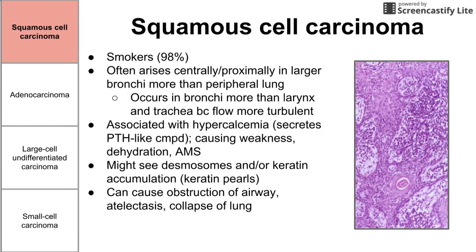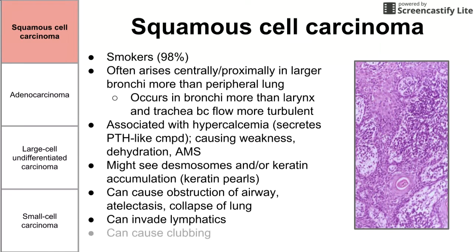Squamous cell can obstruct airways and can cause atelectasis. So if you see collapse of a lung, it's not necessarily caused by a pneumothorax — it could be a squamous cell carcinoma. Squamous cell can also invade the lymphatics, and lastly, it can cause clubbing in the fingers. Those are other signs that might point you to squamous cell.